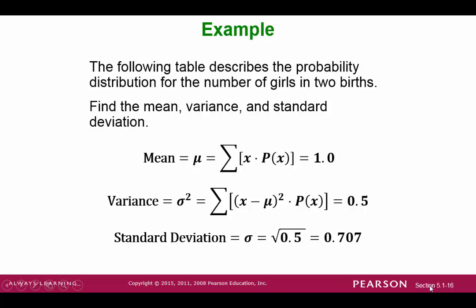So therefore, we can state that our mean or expected value is equal to 1. Our variance is equal to 0.5. And our standard deviation is simply the square root of the variance. And in this case, that simplifies to about 0.707.